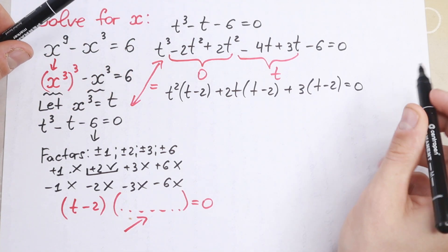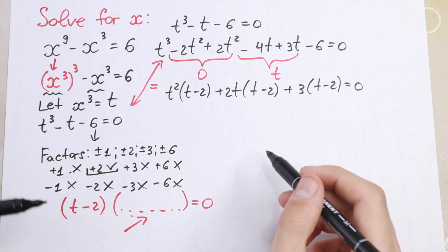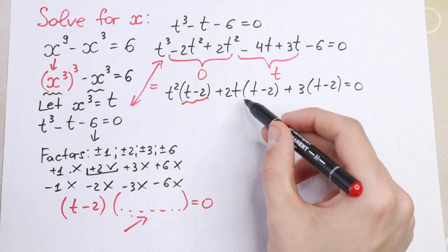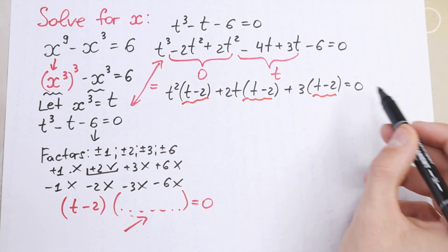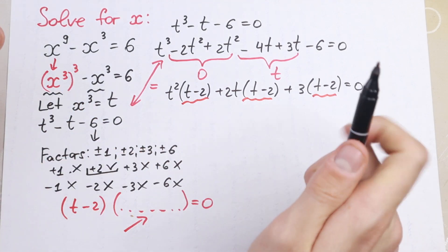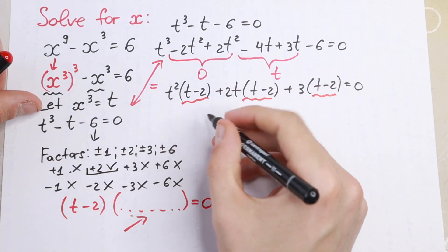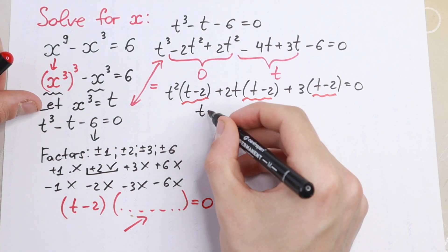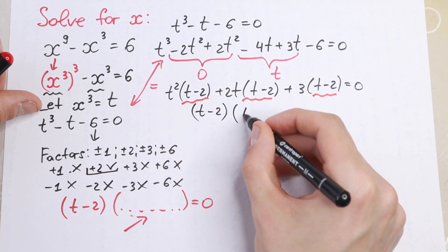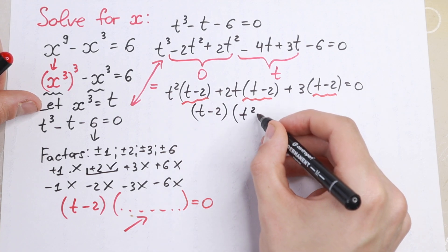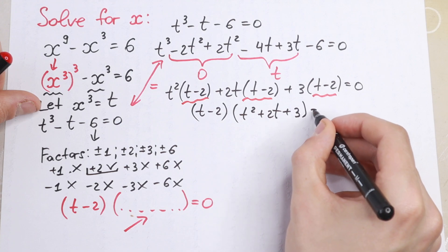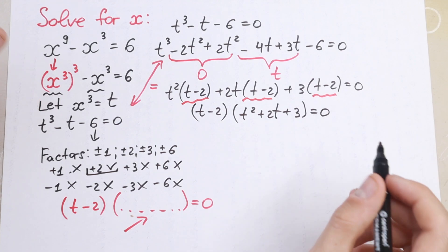As you can see, using this trick we can now factor out (t minus 2) since it is common to all terms. And if we factor it out, we get our final factored equation: (t minus 2) times (t squared plus 2t plus 3) equal to zero.